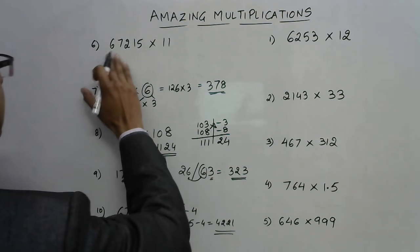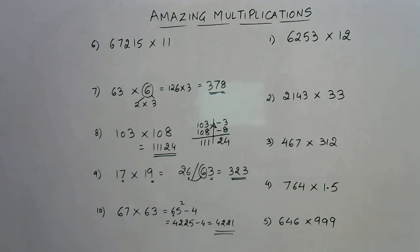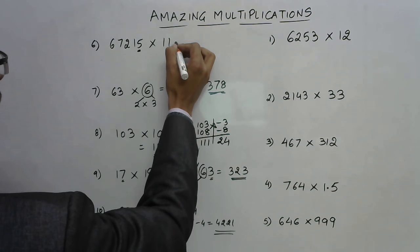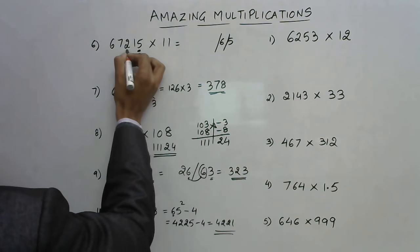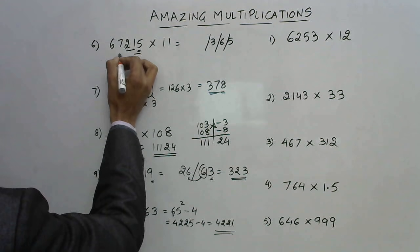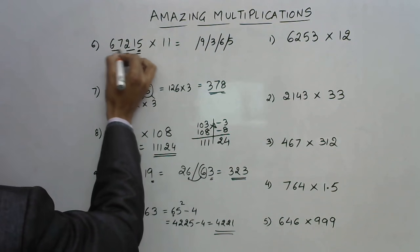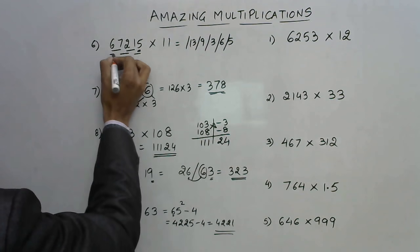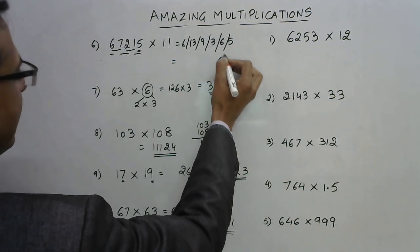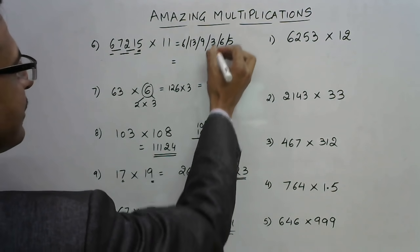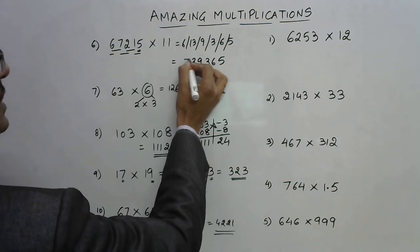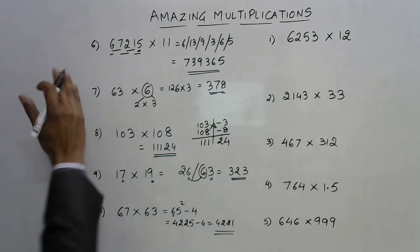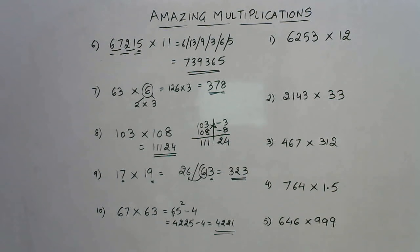Now the fifth one, 67215 into 11. How do you multiply a number by 11? A very simple method. Start from the unit place, 5. Write 5 here and separate by slashes. 5 plus 1 is 6, 1 plus 2 is 3, I'm making pairs. 2 plus 7 is 9, then 6 plus 7 is 13, and then the final 6. Now all the single digits will be retained: 5, 6, 3, 9, 3. This number 1 will be carried forward, so 6 becomes 7. That's the answer for 67215 multiplied by 11. So these are the 5 tricks.